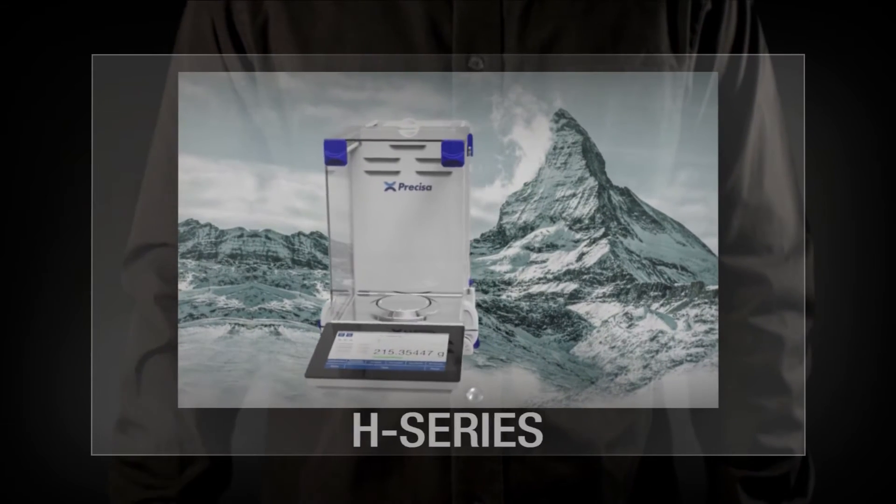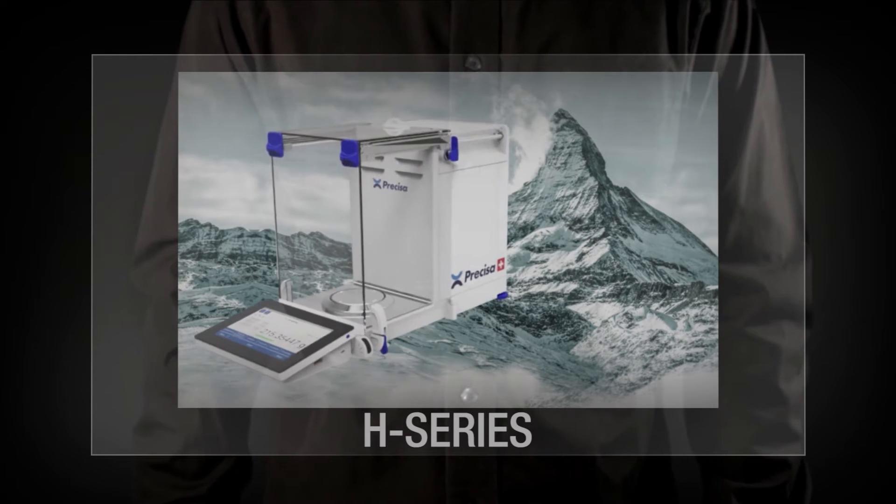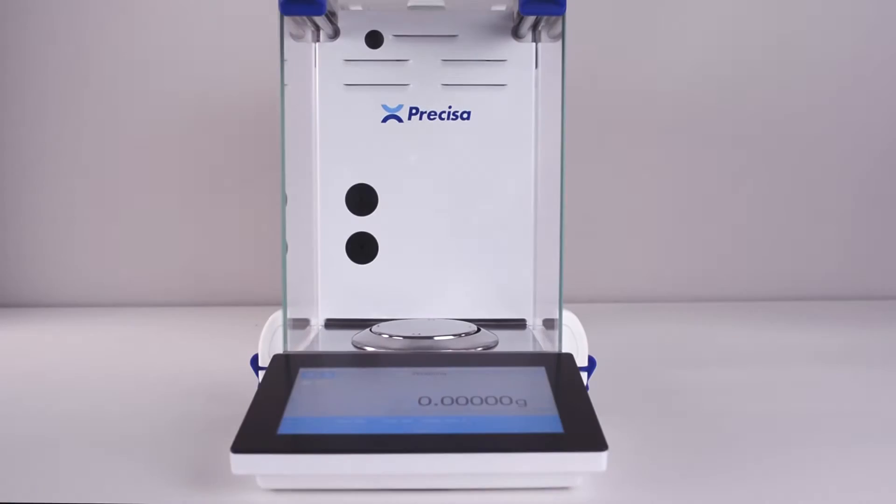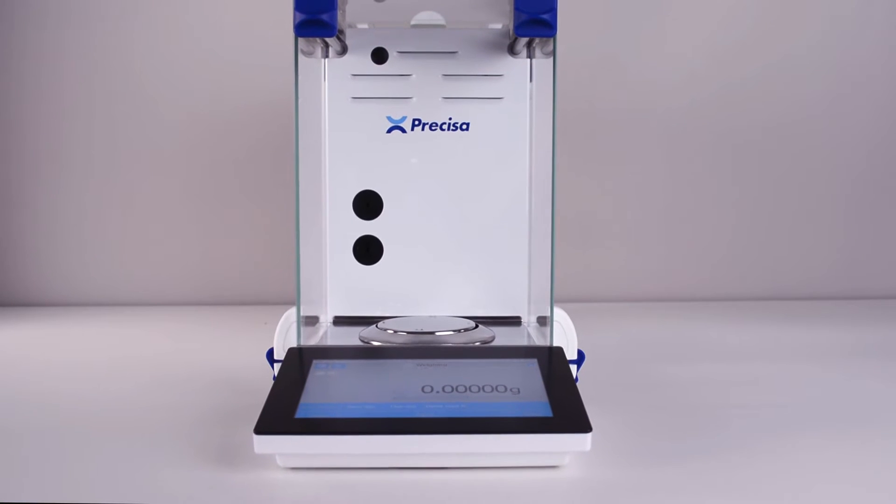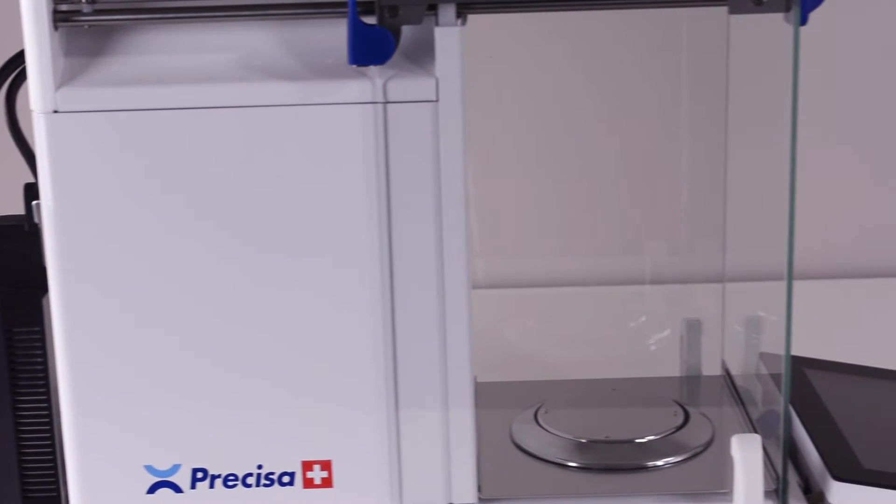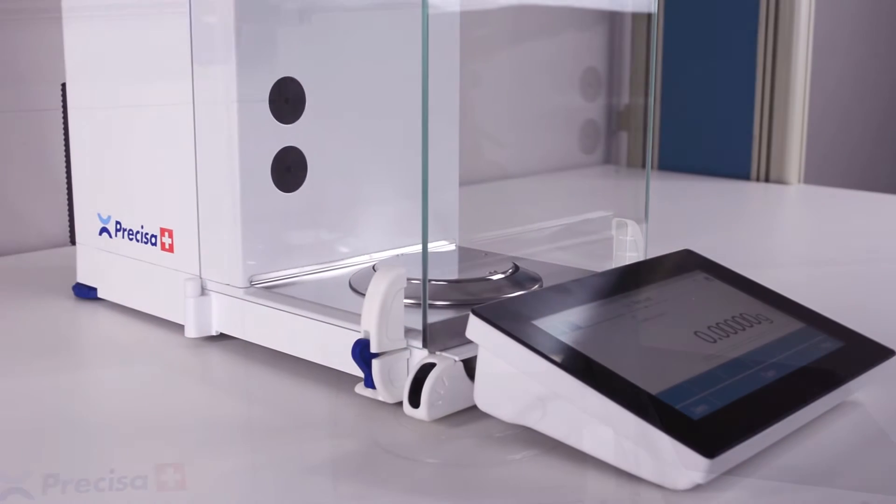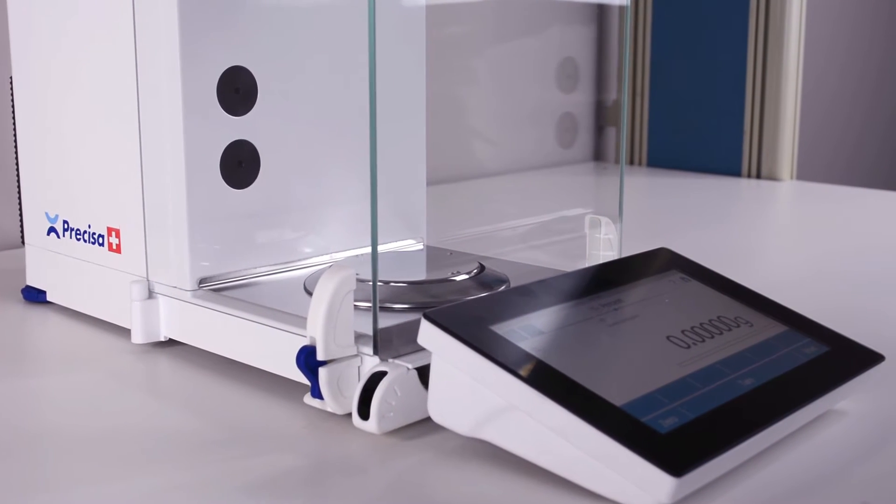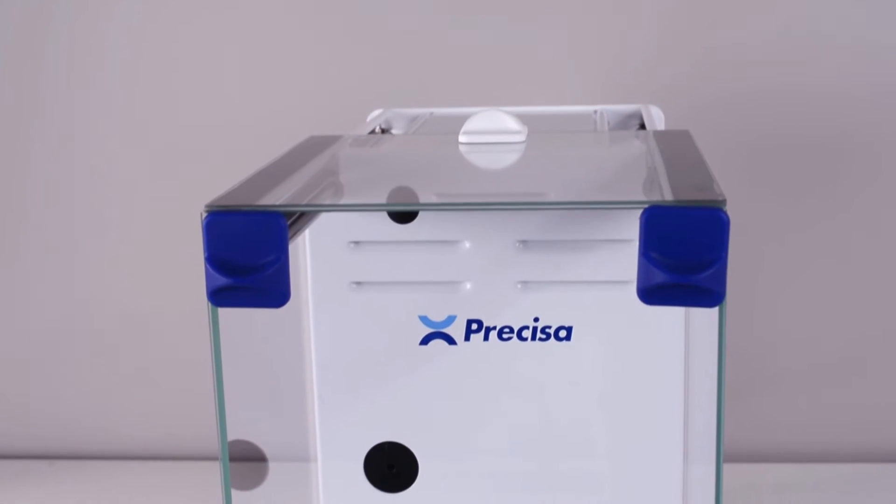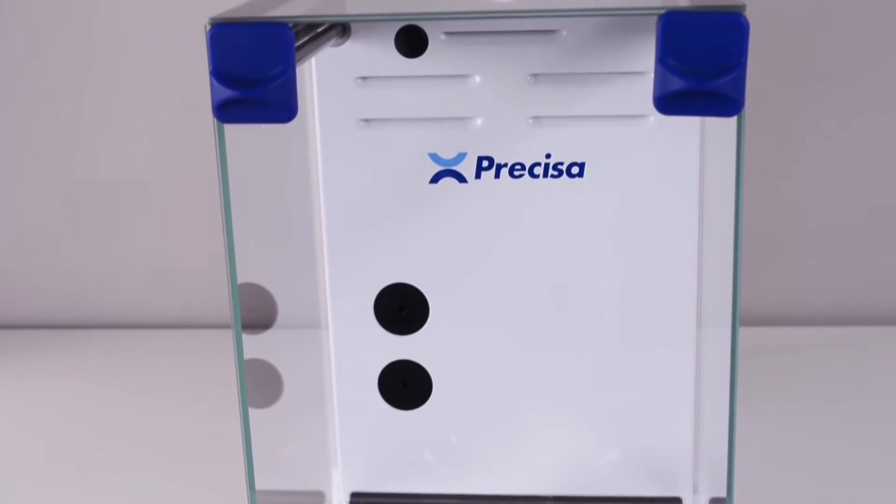The Precisa H series, a semi-micro and analytical balance range with touchscreen software built from the ground up. This balance has been designed to create a tablet interface so intuitive that every single feature of the balance can be accessed without ever reading the manual. After such meticulous work in design and manufacturing, the Precisa H series was born.